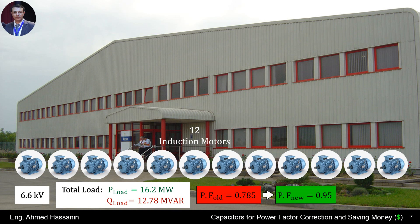First, we want to calculate the rated reactive power, or the rated megavars, of the capacitor bank to correct and improve the factory power factor from 0.785 to 0.95.